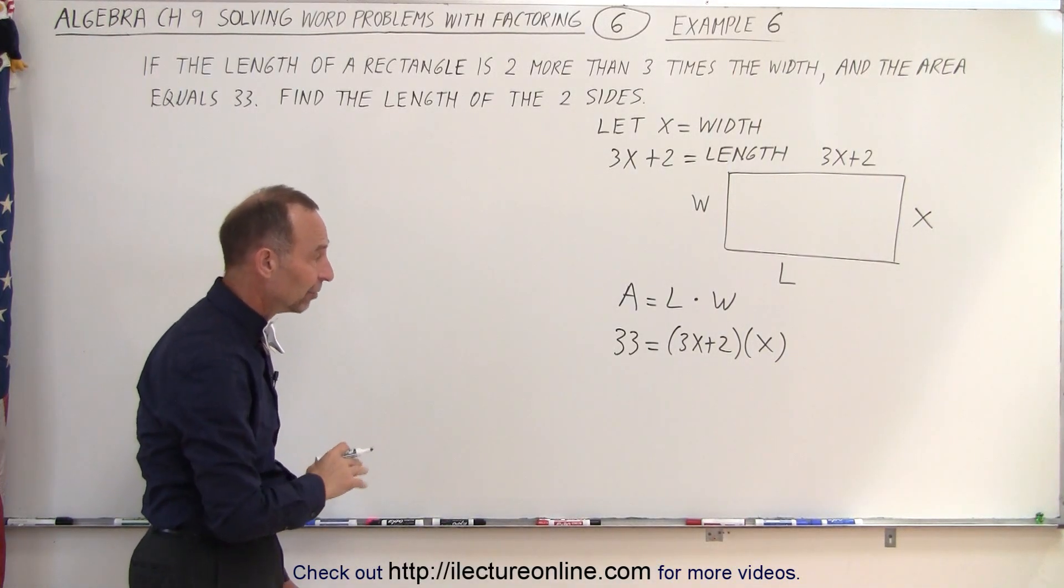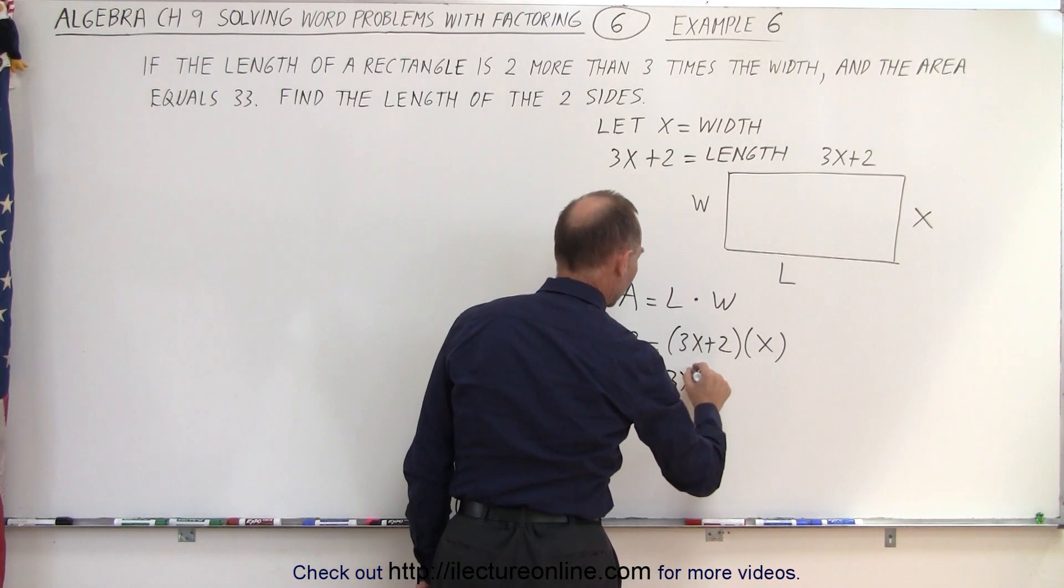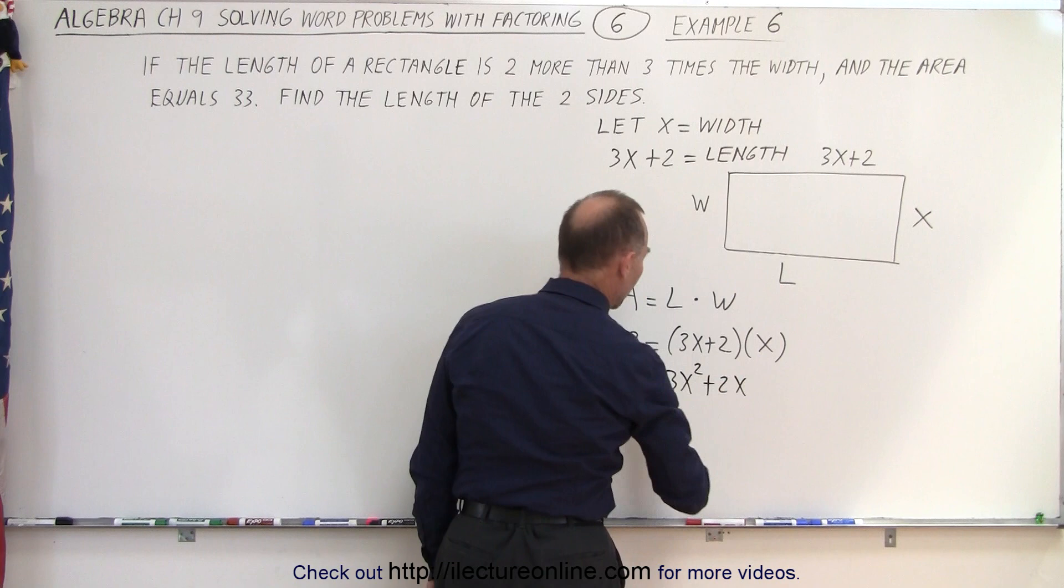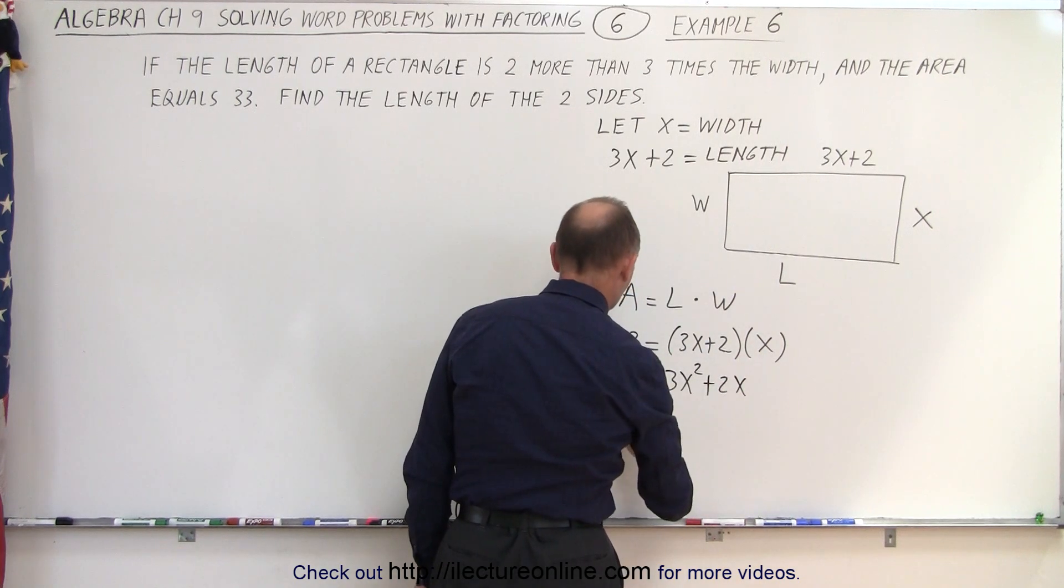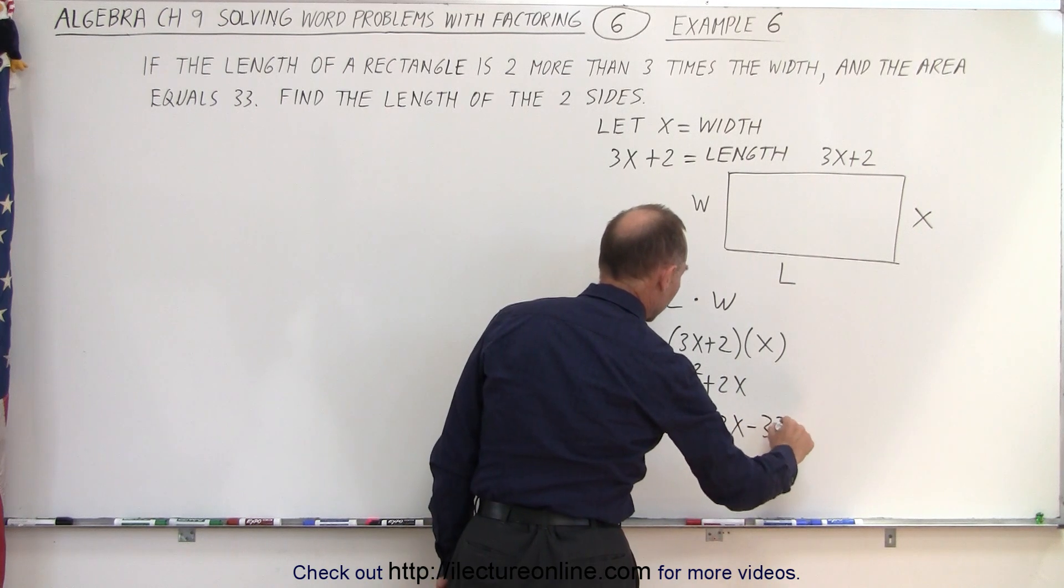Now we're going to have to solve that for x, so let's multiply everything through. We get 33 is equal to 3x squared plus 2x. Moving everything over to one side, we get zero is equal to 3x squared plus 2x minus 33.